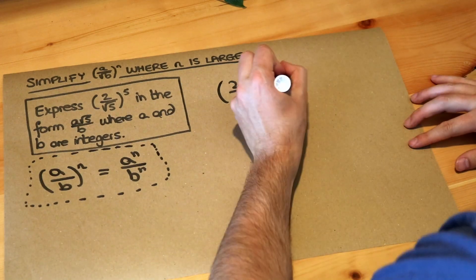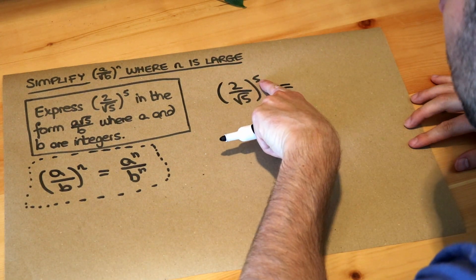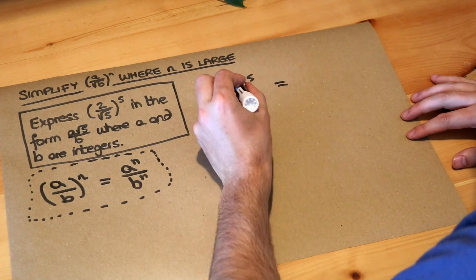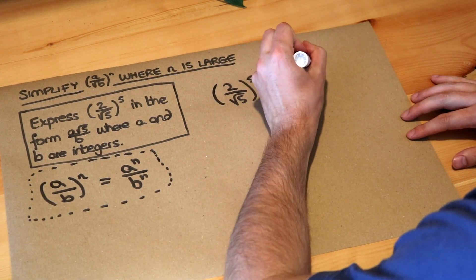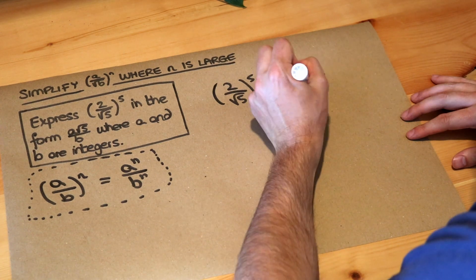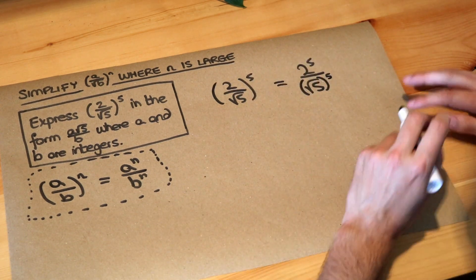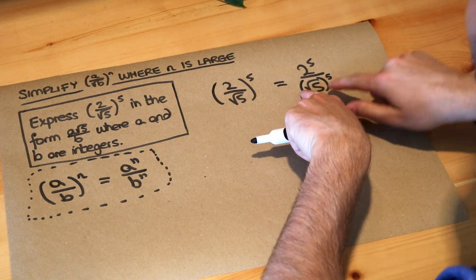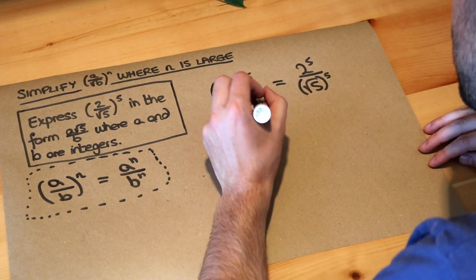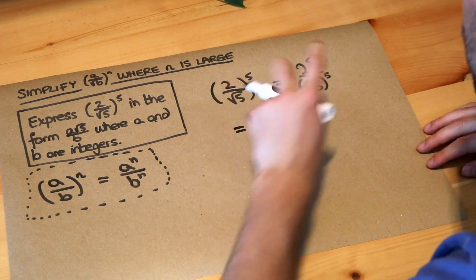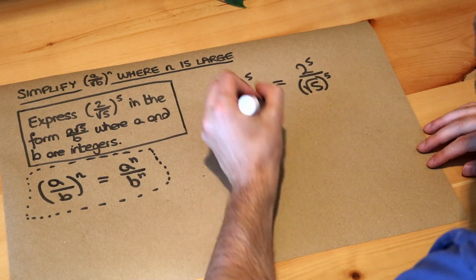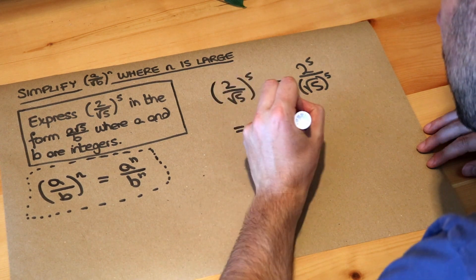So that power of 5 we're going to apply to both the numerator, the 2, and to the root 5. So we're going to have 2 to the 5 over root 5 to the power of 5 — putting root 5 in brackets for clarity. Now 2 to the power of 5 is 2 times 2 times 2 times 2 times 2, which is 32. That's a good one to know by heart.